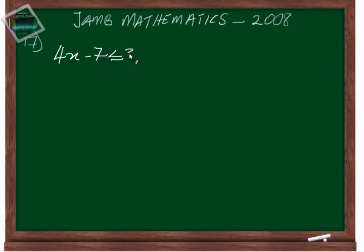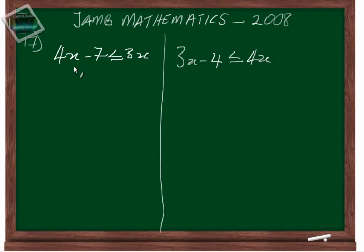So first of all solve this before going to the next inequality, which is 3x minus 4 is less than or equal to 4x. Let's start off with this.